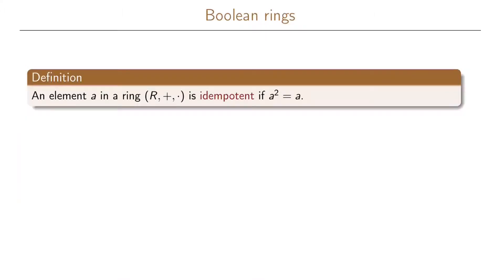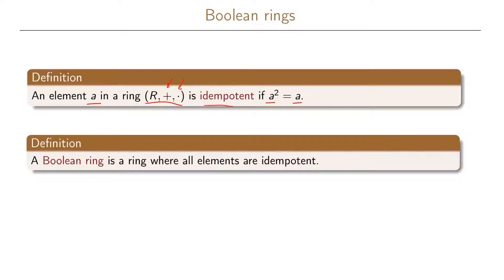We will now define a special type of ring called a boolean ring. In order to define a boolean ring, we will first define the property of an element being idempotent. An element a in our ring with addition and multiplication operations is idempotent if the square of the element is the element itself. Using this, a boolean ring is a ring where all elements are idempotent.